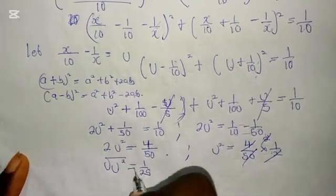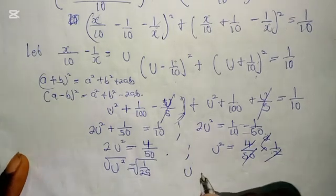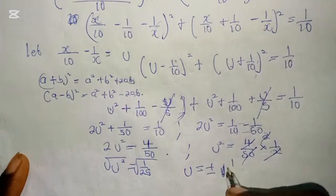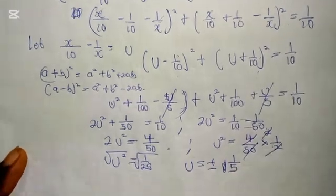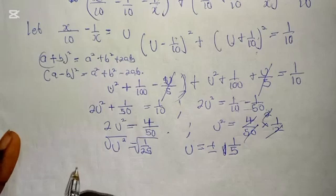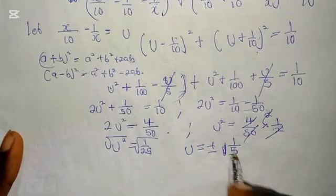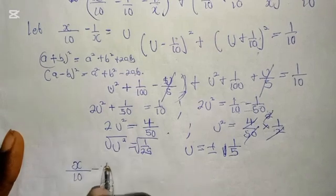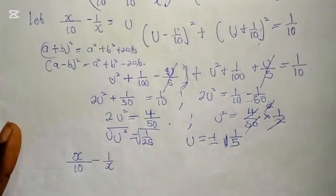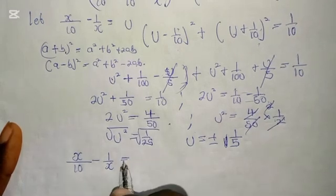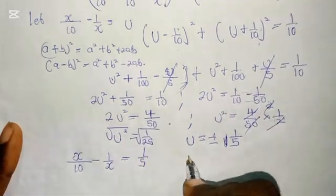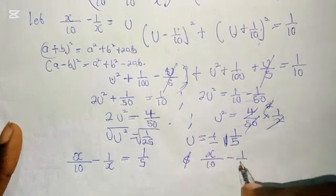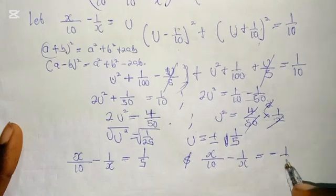Therefore, taking the square root of both sides, we get u equals plus or minus 1 over 5. So now we have two values for u. We write x over 10 minus 1 over x equals u. So we have two solutions: x over 10 minus 1 over x equals 1 over 5, and also x over 10 minus 1 over x equals minus 1 over 5.